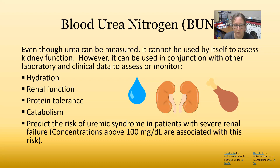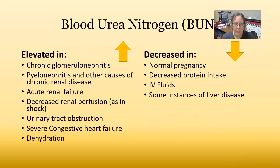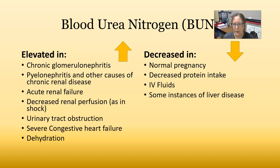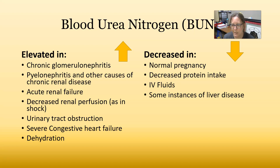BUN is expected to be elevated in chronic glomerulonephritis, pyelonephritis, and other causes of chronic renal disease, acute renal failure, decreased renal perfusion as seen in shock, urinary tract obstruction, severe congestive heart failure, and dehydration. BUN is expected to be decreased in normal pregnancy — likely due to increased fluid volume — decreased protein intake, IV fluid administration, and some instances of liver disease where the liver cannot process proteins well.